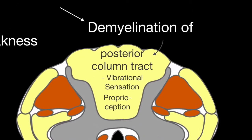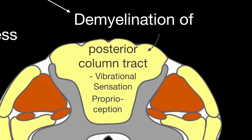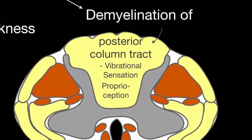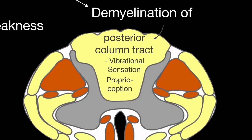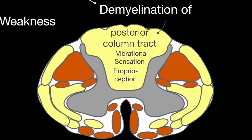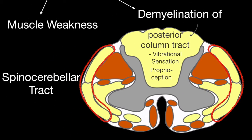The posterior column tract is responsible for vibrational sensation and proprioception — that is, where you are in space. Thus, demyelination results in a decrease of proprioception and vibrational sensation.